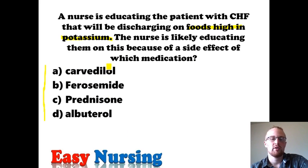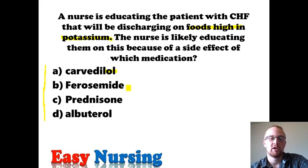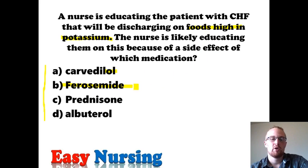Carvedilol — if you see '-lol,' that's a beta blocker, so that's for blood pressure. Then we have furosemide, also known as Lasix. This is a diuretic that helps the patient get rid of fluids by having the patient excrete fluids, and what happens is they end up excreting a lot of potassium. Lasix can lower potassium — it's not a potassium-sparing diuretic. So when they're on furosemide, they need to be sure to eat lots of potassium. That's our answer.